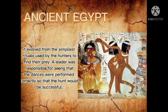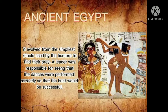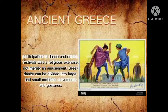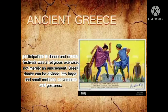The next era is ancient Egypt. Dance evolved from the simplest rituals used by hunters to find their prey. A leader was called a priest dancer and was responsible for seeing that the dances were performed correctly so that the hunt would be successful. Next is ancient Greece, where participation in dance and drama was a religious exercise. Greek dance can be divided into large and small motions, movements, and gestures.